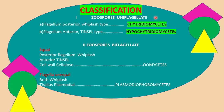Subdivision Mastigomycetes has been classified into four classes, and this classification is based on the number and type of flagellum. When zoospores have a single flagellum, the class can be Chytridiomycetes or Hyphochytridiomycetes. In Chytridiomycetes, the position of the flagellum is posterior and the type is whiplash. In Hyphochytridiomycetes, the flagellum is anterior in position and the type is tinsel. On the basis of type and insertion of flagellum, these two classes have been created.